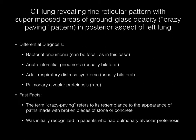This CT image demonstrates a fine reticular pattern with superimposed areas of ground glass opacification, the so-called crazy paving pattern in the posterior aspect of the left lung. The differential diagnosis here should include bacterial pneumonia, which can be focal as in this case; acute interstitial pneumonia, which is usually bilateral; adult respiratory distress syndrome, which is usually bilateral; and pulmonary alveolar proteinosis, which is fairly rare.